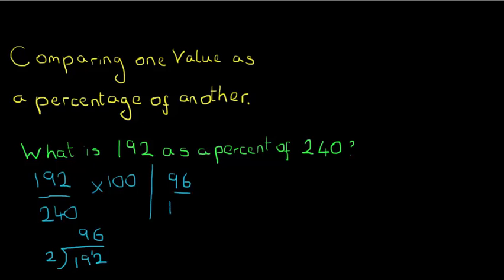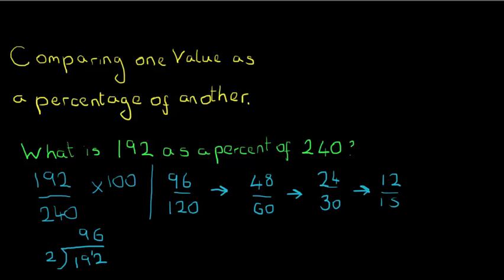Half of 240 is 120. They're still both even, so half of 96 is 48 and half of 120 is 60. I can halve again: 24 over 30, and again: 12 over 15. I can't halve any more, but 3 goes into both top and bottom. How many threes in 12? Four. How many threes in 15? Five. So 192 over 240 simplifies all the way down to 4 over 5.